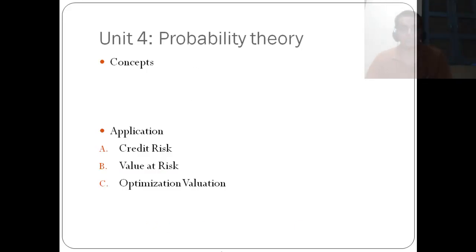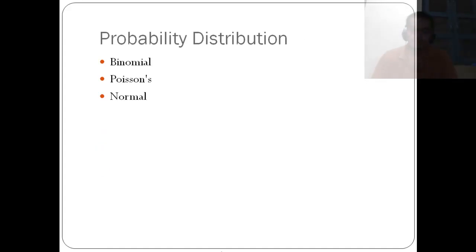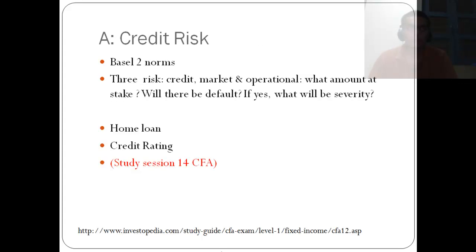Coming to the last unit of this certificate program, we have the credit risk, value at risk, and the optimization evaluation. To understand this fourth unit, you need to know about the binomial, Poisson, and normal distribution which are often cited.